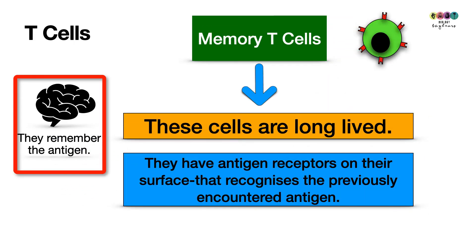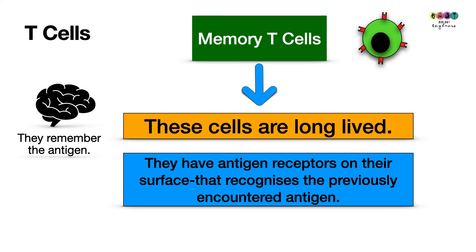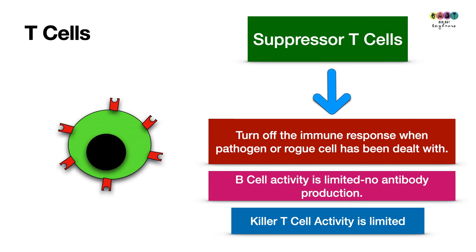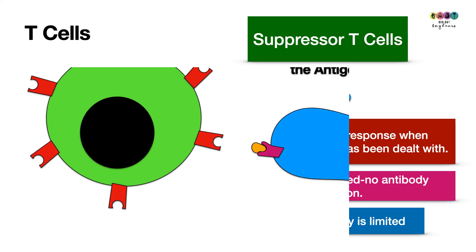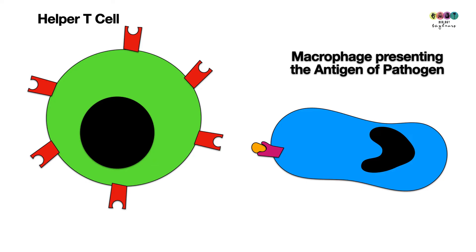Memory T cells remember the specific antigen that was encountered and, should they need to, can very quickly produce those specific helper T cells and killer T cells. Suppressor T cells are really important because they switch off the whole immune response once the pathogen or infection has been overcome — they stop antibody production, inhibit it, and call off or limit the activity of killer T cells.